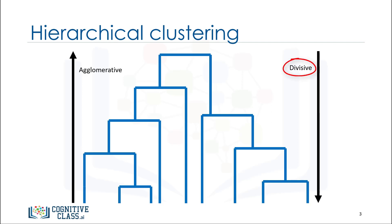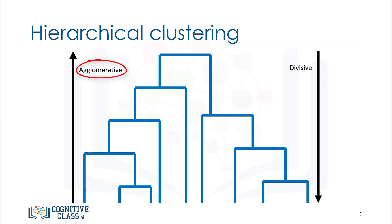Divisive is top-down, so you start with all observations in a large cluster and break it down into smaller pieces. Think about divisive as dividing the cluster. Agglomerative is the opposite — it is bottom-up, where each observation starts in its own cluster and pairs of clusters are merged together as they move up the hierarchy. Agglomeration means to amass or collect things, which is exactly what this does with the clusters. The agglomerative approach is more popular among data scientists, and so it is the main subject of this video.